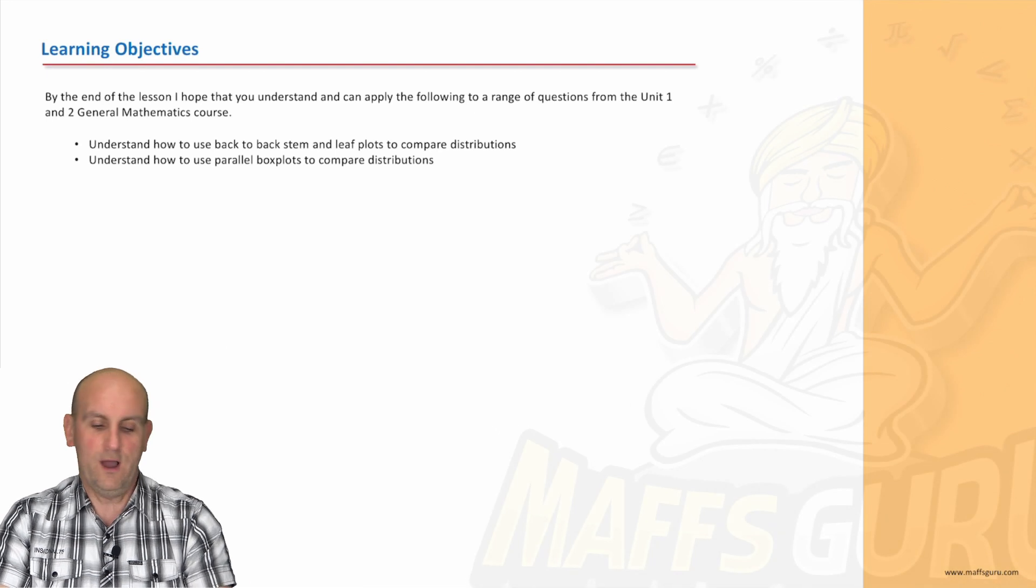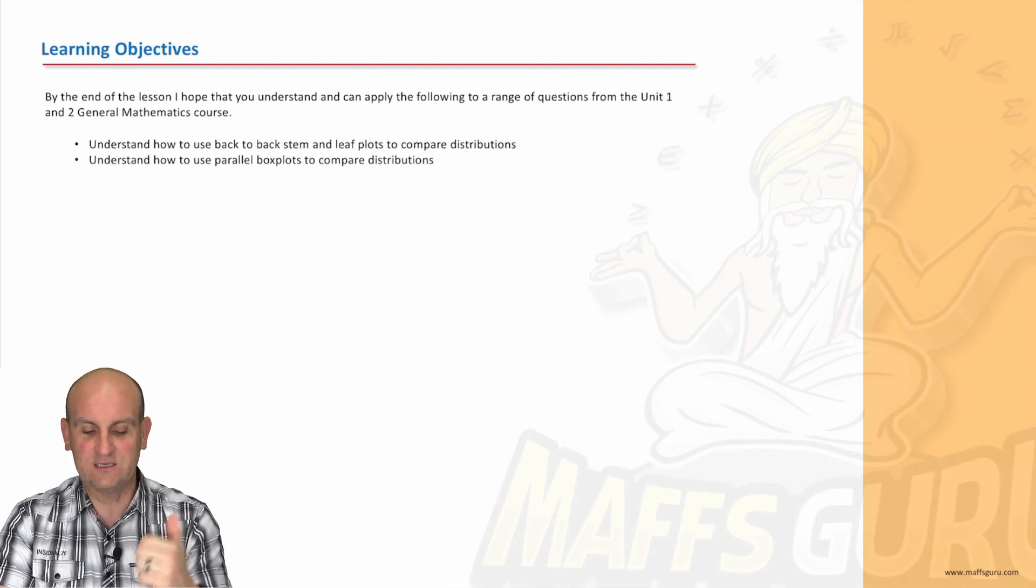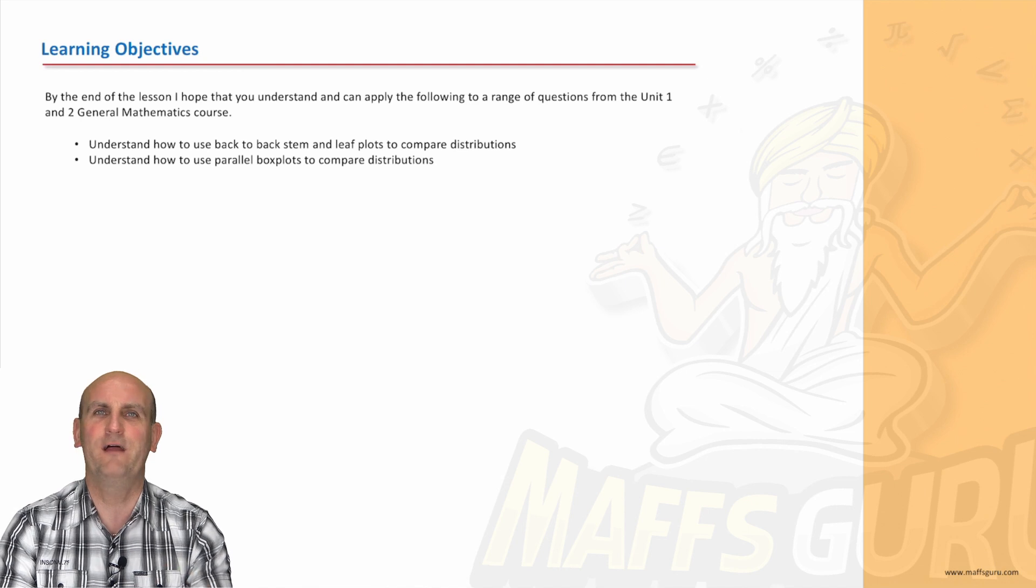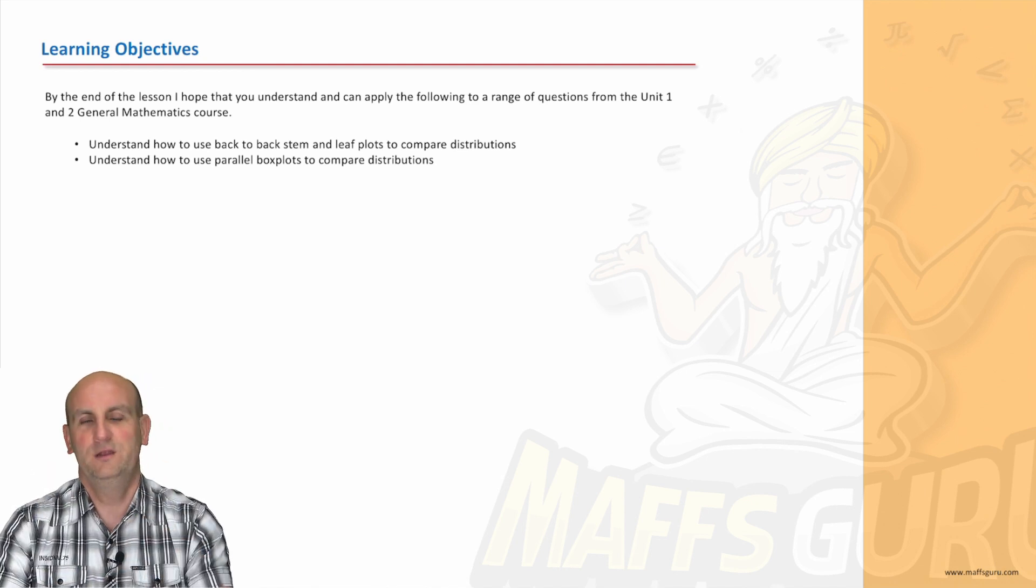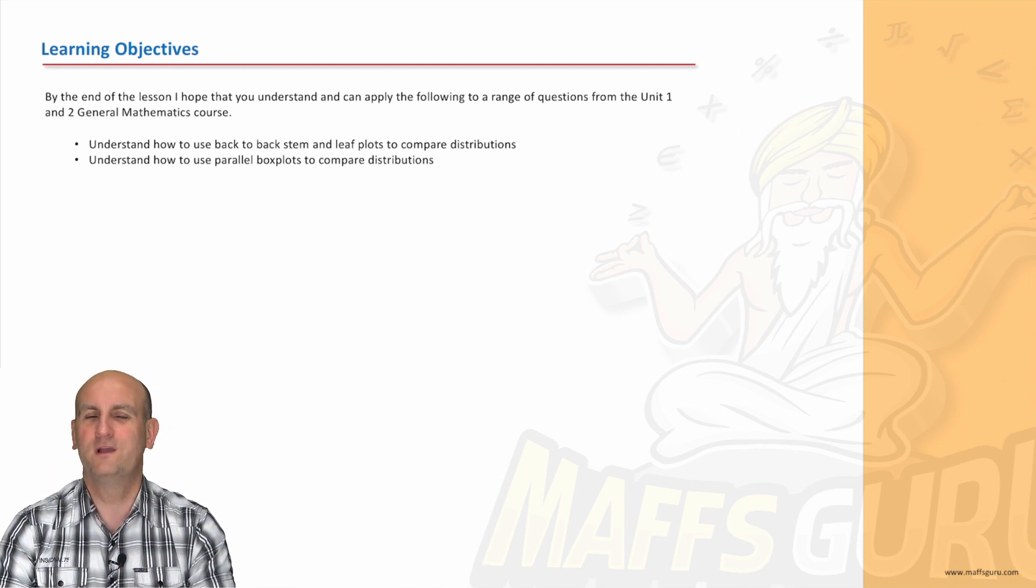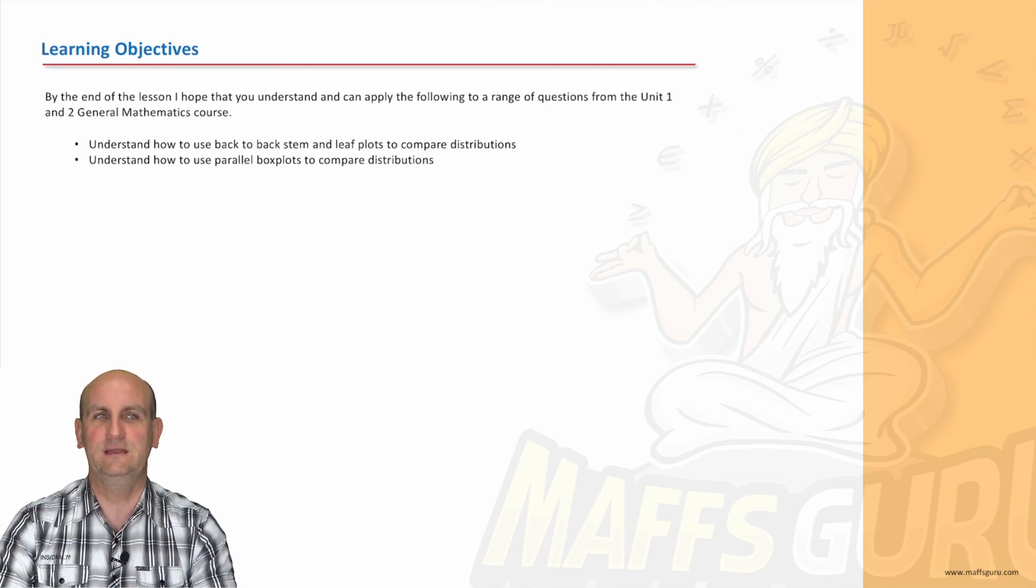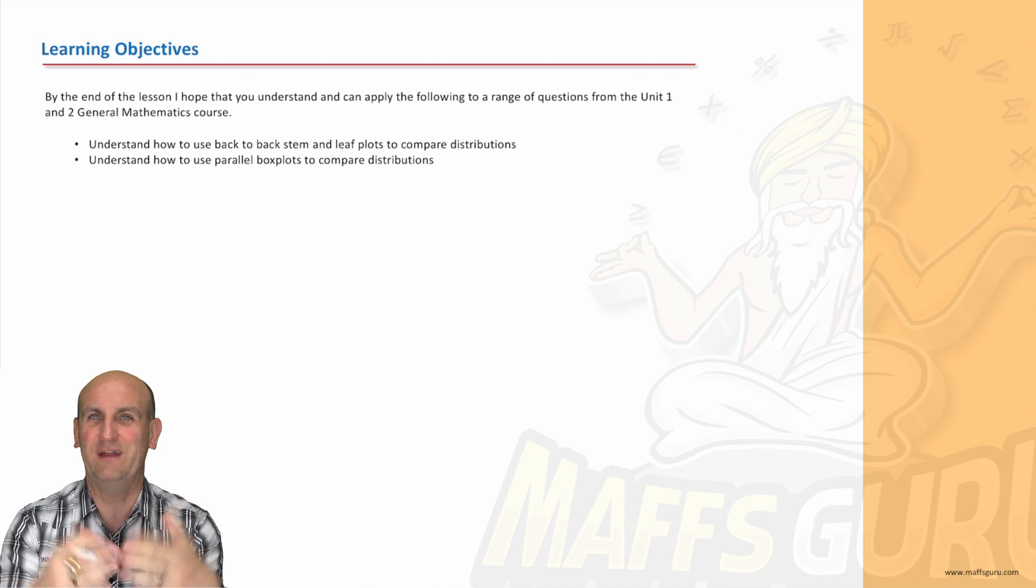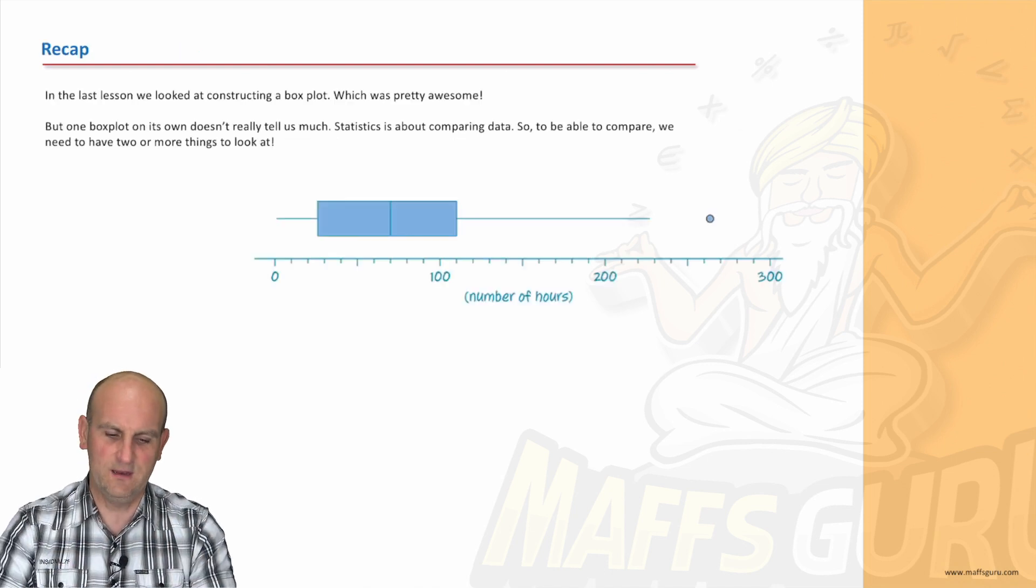So what are we doing today? Well, understand how to use back-to-back stem and leaf plots, or they're called stem plots, to compare distributions and understand how to use parallel box plots. Parallel, something's parallel, we're not only talking about two things, but interestingly you can talk about a lot more, because parallel means they're never going to meet. Which is a bit odd really, because how would you have a box plot meeting? Are they going to crash together? Seems a bit weird. We're moving on.